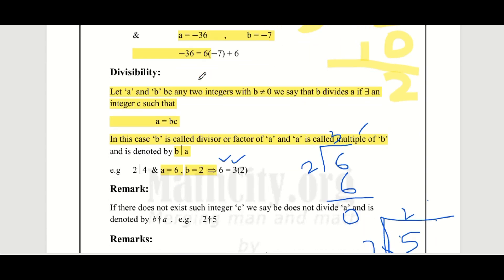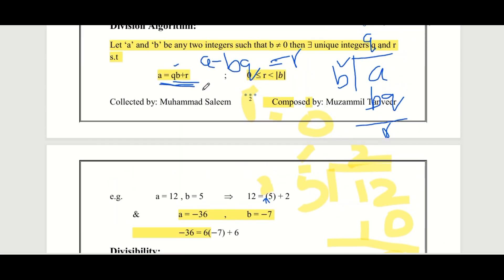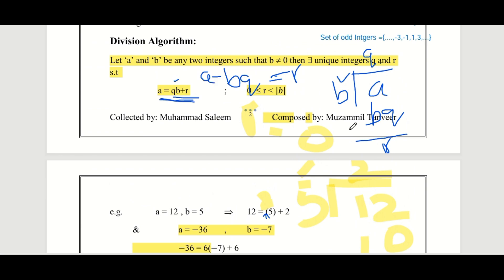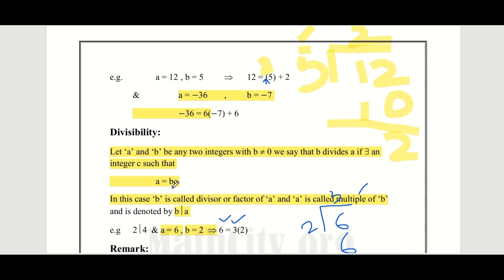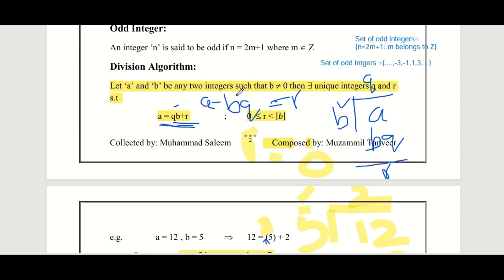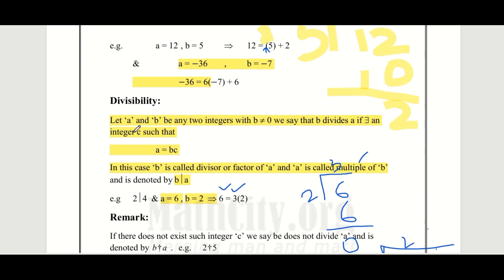Next, divisibility: let a and b be two integers with b non-zero. If b divides a, then there exists an integer c such that a equals bc — meaning a is a multiple of b. We can write a as a multiple of b. This is essentially the divisibility definition — it holds when the remainder in division is zero. For example, with 16 and 4: 4 times 4 equals 16 with remainder 0.